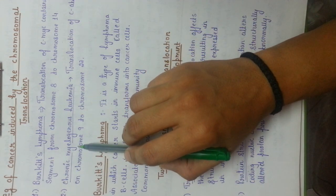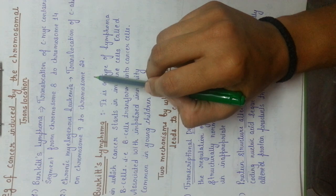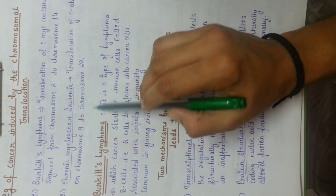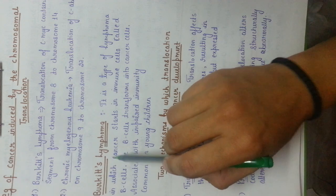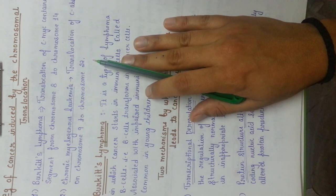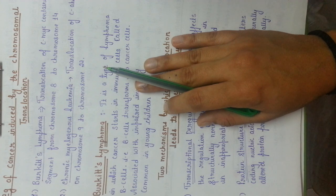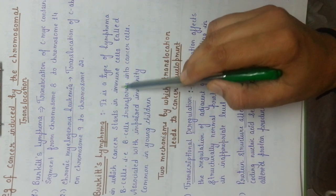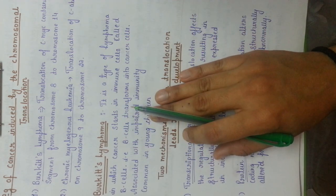In chronic myelogenous leukemia, the translocation occurs between chromosome number 9 and chromosome number 22. The C-ABL gene present on chromosome 9 is translocated to chromosome 22. Burkitt's lymphoma is a type of lymphoma in which cancer starts in the immune cells called B cells. These Burkitt's lymphomas are specifically generated from B cells, meaning the B cell transforms into cancer cells.